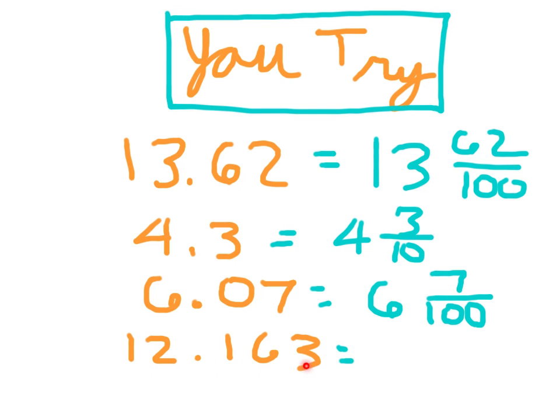How would I read this last number? 12 and 163 thousandths. So the 12 is pretty obvious. Did you write 163 over 1 thousandth? 163 thousandths. Let's move on.